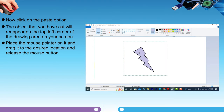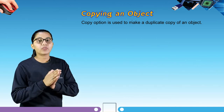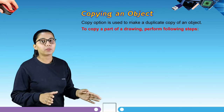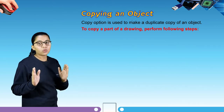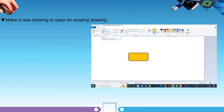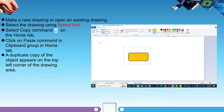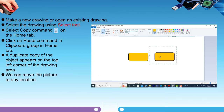Our next topic is copying an object. The copy option is used to make a duplicate copy of an object. To copy a part of a drawing: make a new drawing or open an existing drawing, select the drawing using the select tool, select the copy command on the home tab, then click on the paste command in the clipboard group on the home tab. A duplicate copy of the object appears on the top left corner of the drawing area, and we can move the picture to any location.